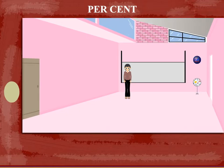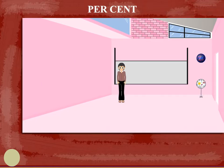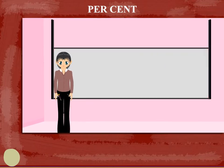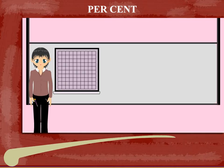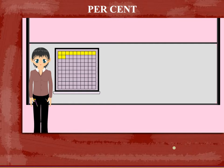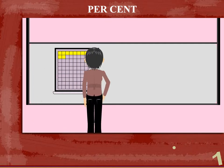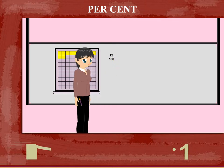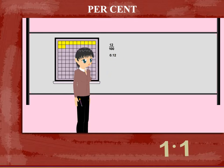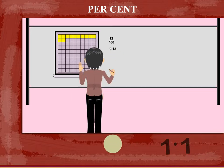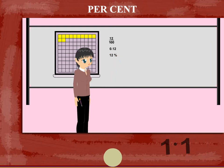Teacher Nancy has a check square on the board with 100 squares. She colors 12 squares and writes the fraction 12 upon 100. This is the same as 0.12, and 12 out of 100 is also 12%.